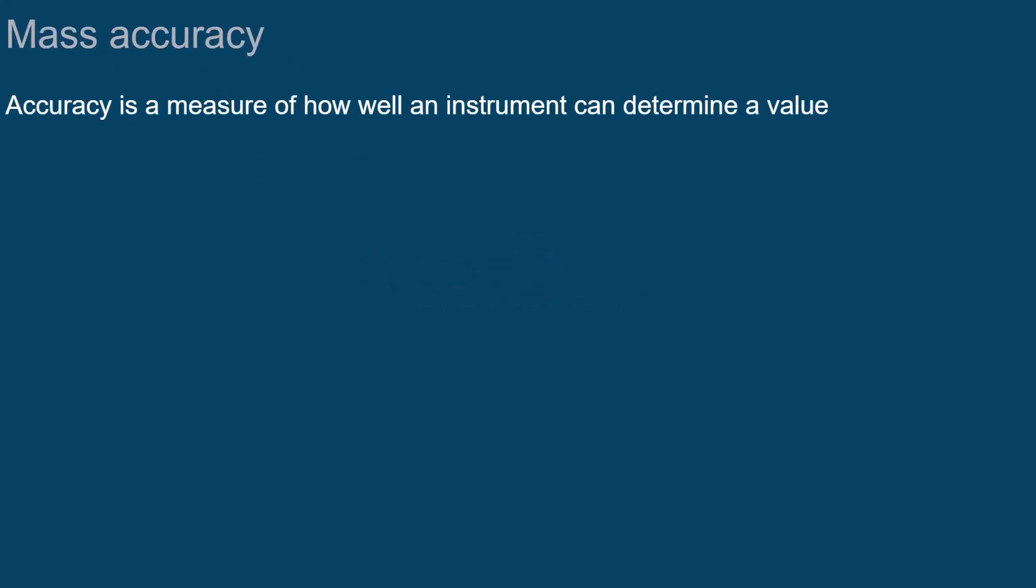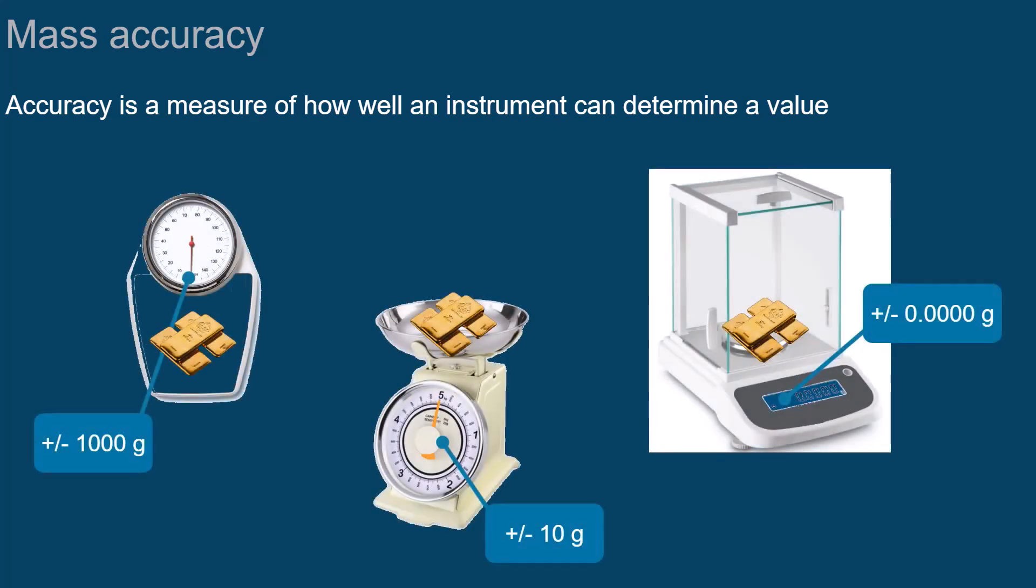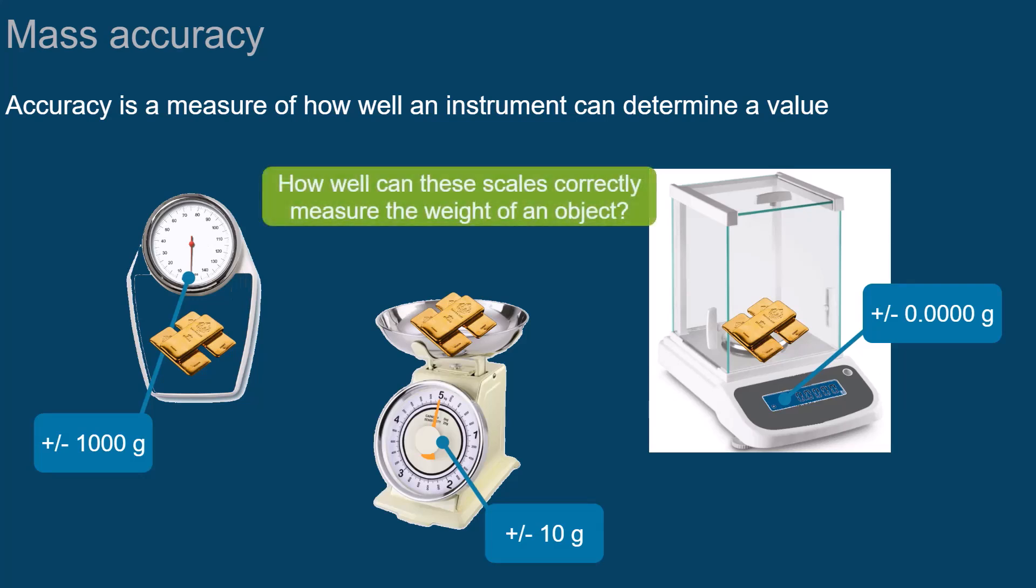Accuracy is a measure of how well an instrument can determine a value. For example, these scales can measure different weights with varying degrees of accuracy. In other words, how well they can correctly determine the weight of an object.